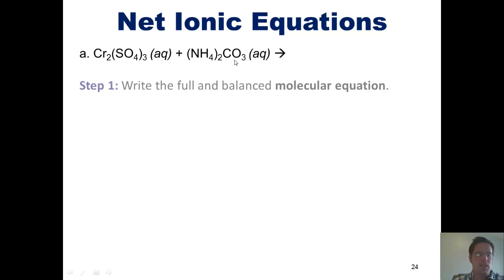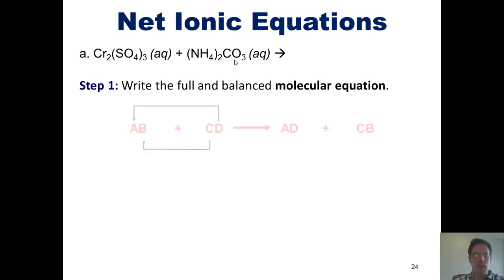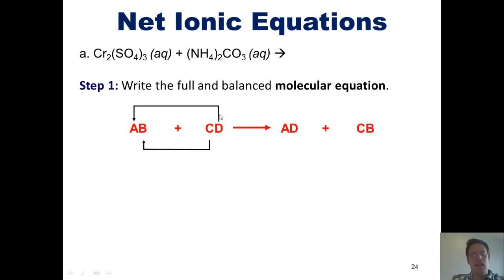Step 1 says write the full and balanced molecular equation. We do this by remembering that in this type of reaction there is a partner swap: cation A gets together with anion D, and cation C gets together with anion B.